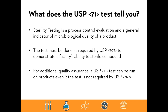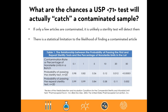This table shows the probability that a USP 71 sterility test will catch a contaminated sample. Keep in mind, if only a few articles are contaminated, it's unlikely the sterility test will detect them based on statistical limitations. For example, at a one percent contamination rate, the probability of still passing the sterility test is 0.82. At five percent contamination, the probability of passing is still not zero. This really stresses why process controls are the most important thing to keep in mind.